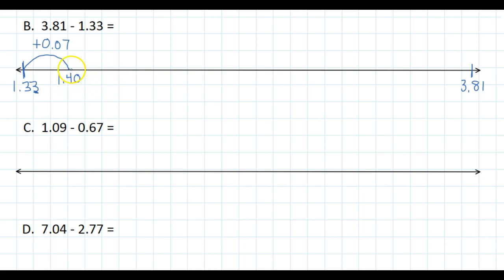So I can do a hop here and I can say I'm going to add 0.41, and that'll leave me with 1.81.